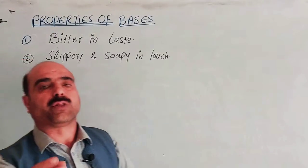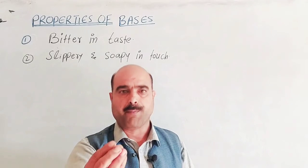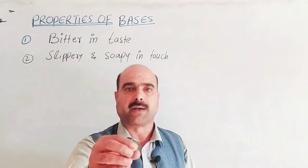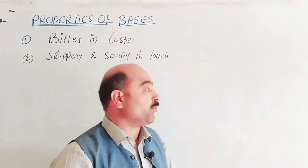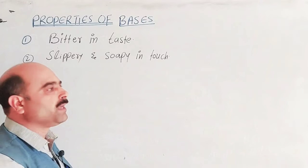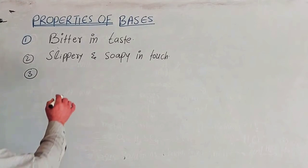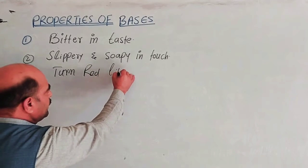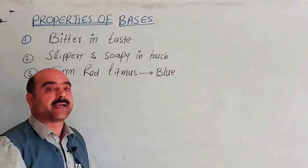Strong bases are also dangerous and corrosive. You should be careful when touching them. The third property is that bases turn red litmus paper blue.